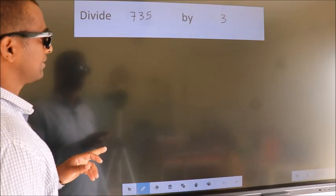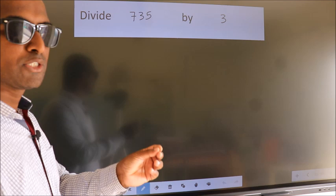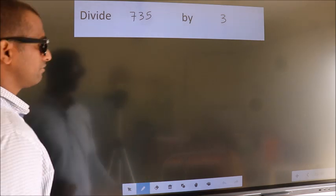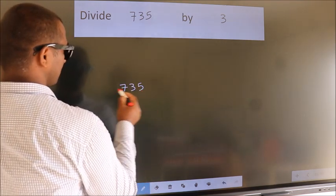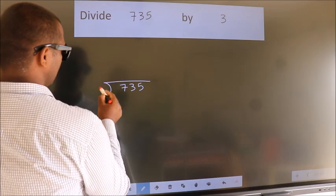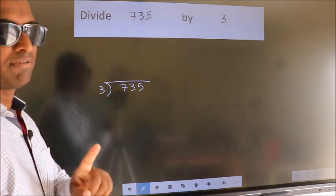Divide 735 by 3. To do this division, we should frame it in this way. 735 here, 3 here. This is your step 1.